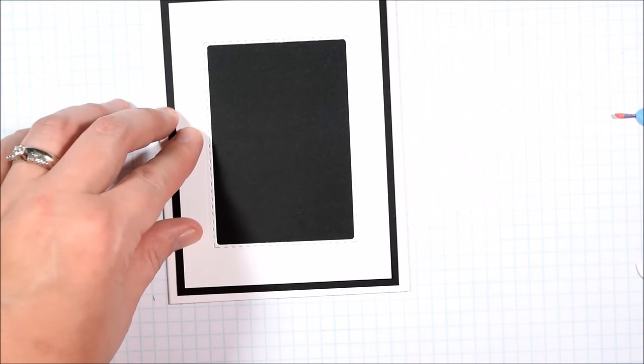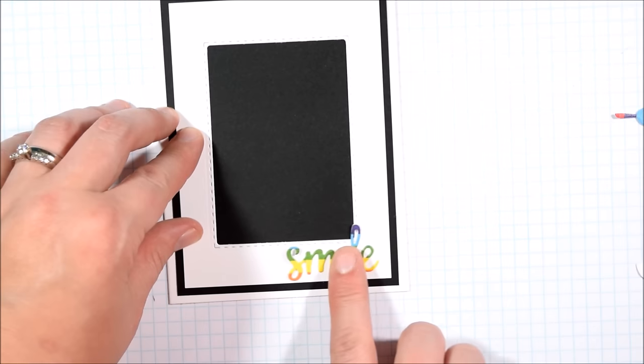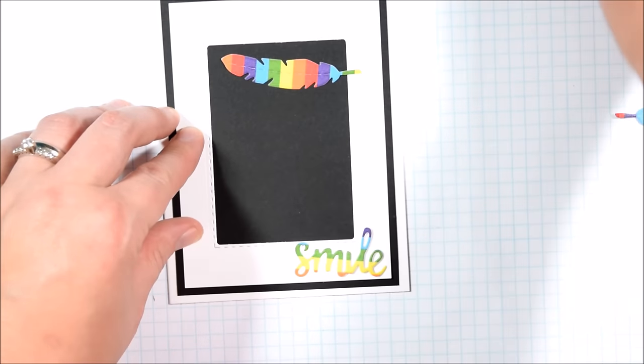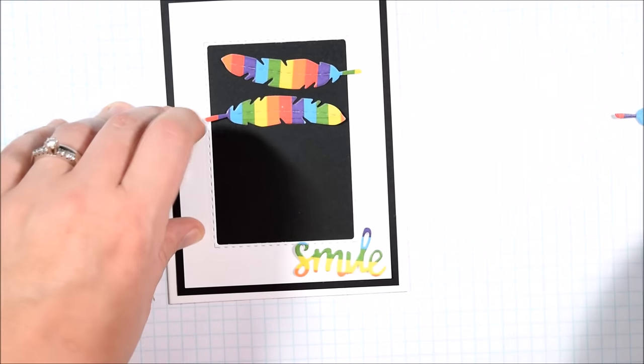So I'm going to layer this white frame over a piece of black cardstock and then arrange my die cuts over it for some interest.